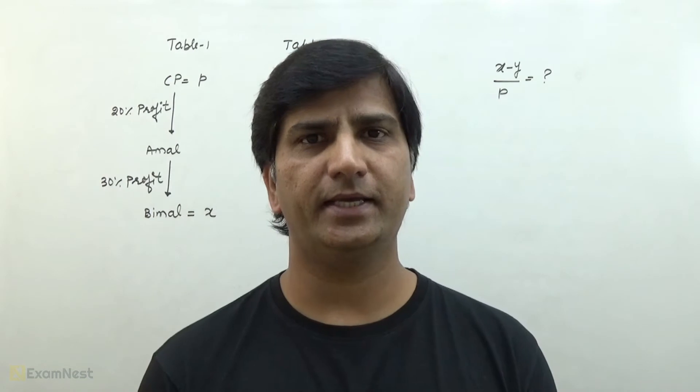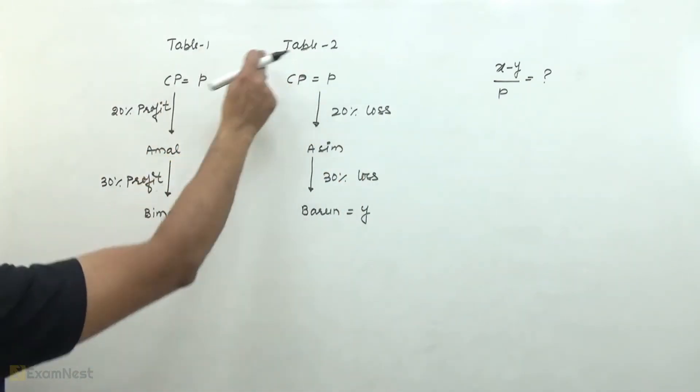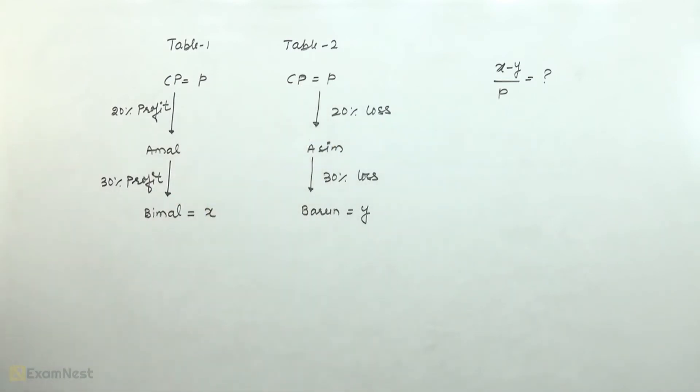This question is easy to moderate level. There are two tables whose cost price is P each. The first table, Amal buys at 20% profit, and then sells to Bimal at 30% profit, who pays X rupees.